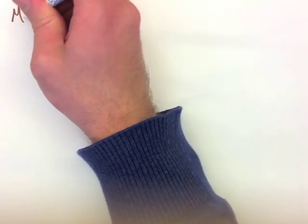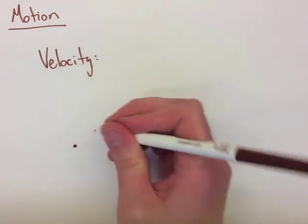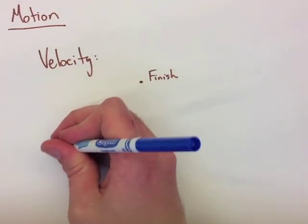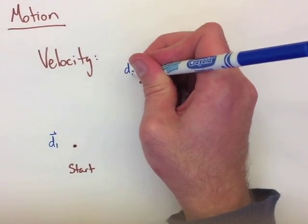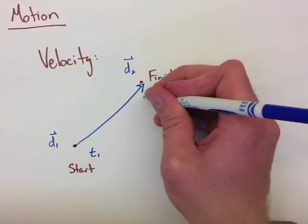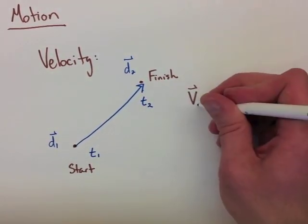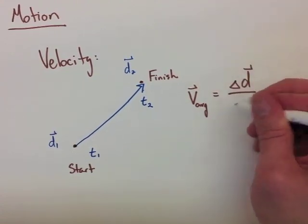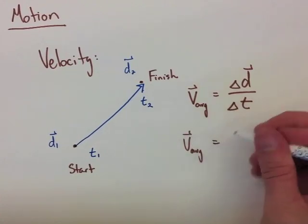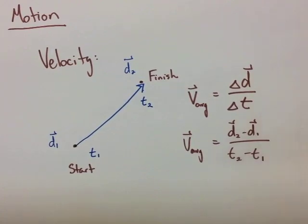The first motion diagram we're going to look at is velocity. Velocity is a description of an object's displacement over an average amount of time. We always have a starting displacement and a finishing displacement, and therefore we always have a starting time and a finishing time. When we're measuring velocity, we have V equals the difference in displacement over the difference in time, which is really V average equals D2 minus D1 over T2 minus T1.